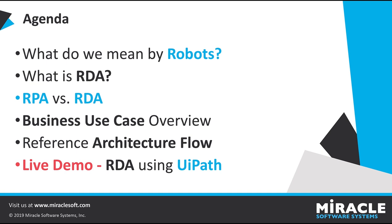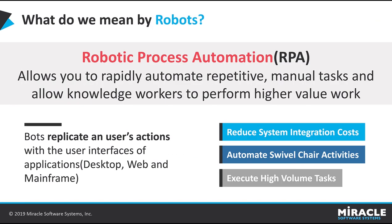Let us move on to the first slide. In this slide I'm going to discuss about robotic process automation. RPA is the use of software combined with both artificial intelligence and machine learning capabilities to handle high-volume repeatable tasks like queries, calculations, and maintenance of records and transactions.